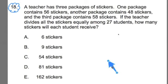And I want to read it over and for this I want to really try and visualize what I read. So make sure you visualize what's going on here. A teacher has three packages of stickers. One package contains 56 stickers. Another package contains 48 stickers. And the third package contains 58 stickers. If the teacher divides all the stickers equally among 27 students, how many stickers will each student receive?